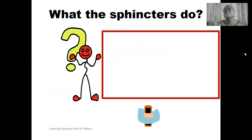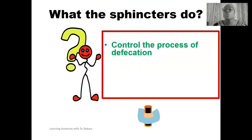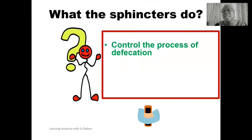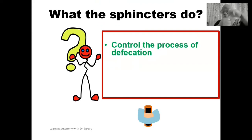Let's look at the functions of the anal sphincters. The anal sphincters control the process of defecation. As muscular bands surrounding the wall of the anal canal, they act as a guide that helps control the passage of substances through the lumen of the anal canal. That is why they control the process of defecation.